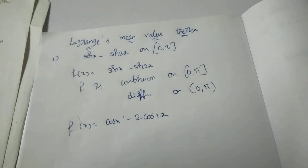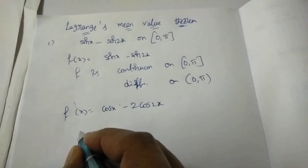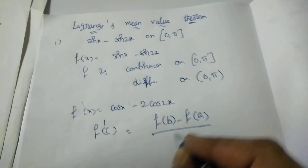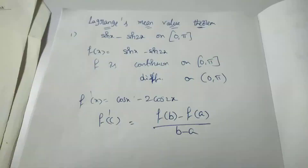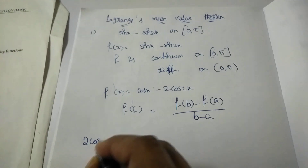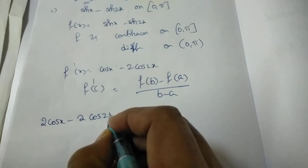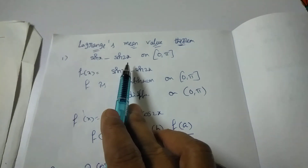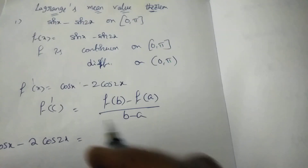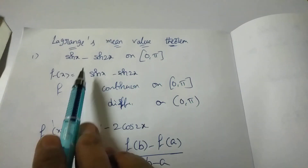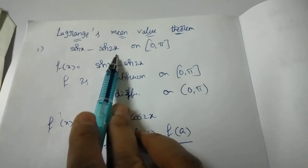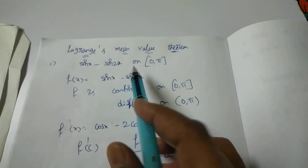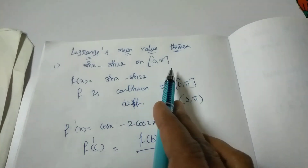Next, apply the Lagrange's theorem formula: f'(c) = [f(b) − f(a)] / (b − a). Here a = 0, b = π. f(π) = sin π − sin 2π = 0 − 0 = 0. f(0) = sin 0 − sin 0 = 0. So f'(c) = (0 − 0) / (π − 0) = 0/π = 0.